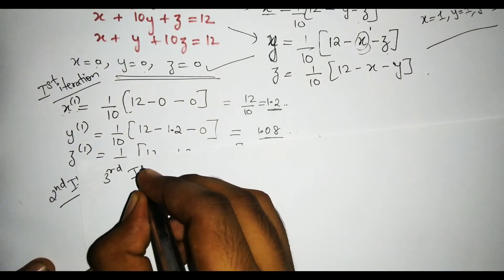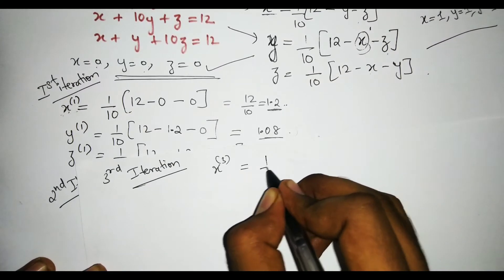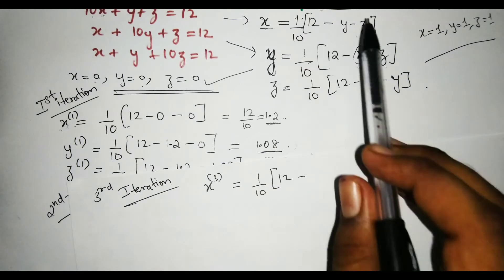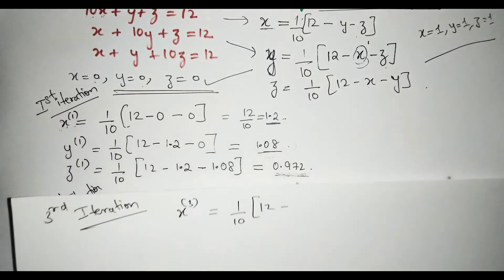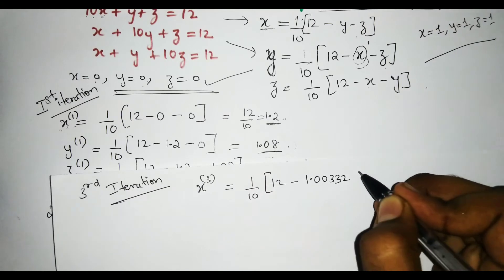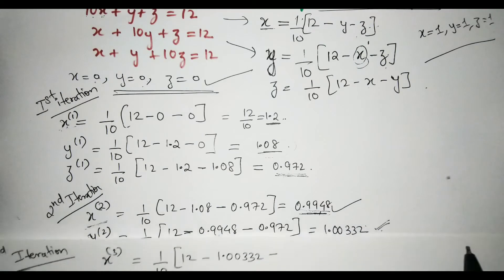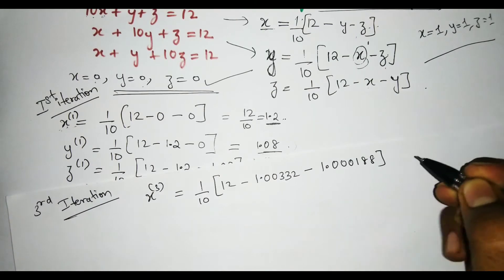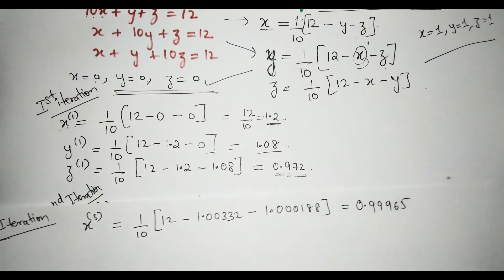For the third iteration, x₃ = (1/10)(12 − y − z). The latest y value is 1.00332 and the latest z value is 1.000188, giving x₃ = 0.99965. You can observe that with each iteration the value of x is getting closer to 1.